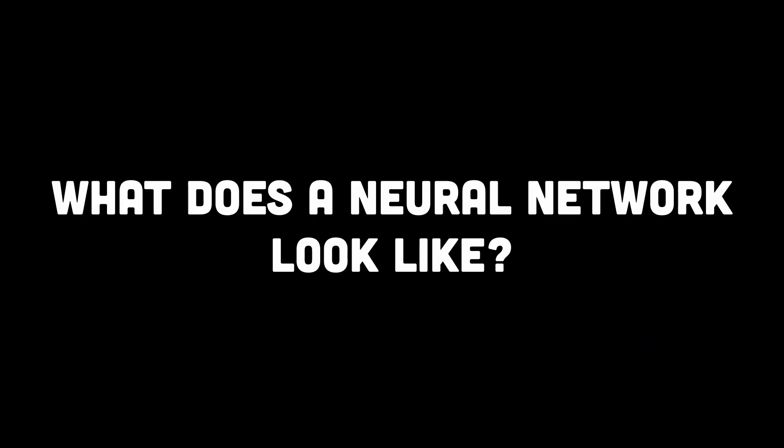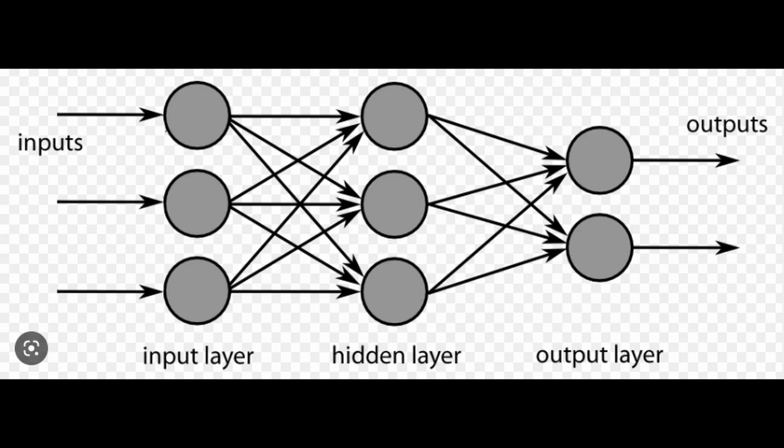What does a neural network look like? In simple terms, there is an input layer, and the input then goes through a bunch of calculations and analysis, which ultimately produces an output or prediction in the output layer. The middle layer responsible for all the calculations and analysis is called the hidden layer.